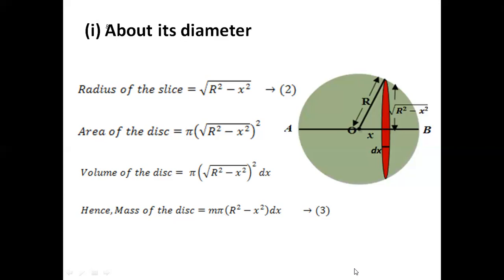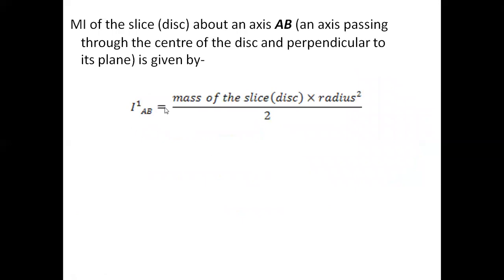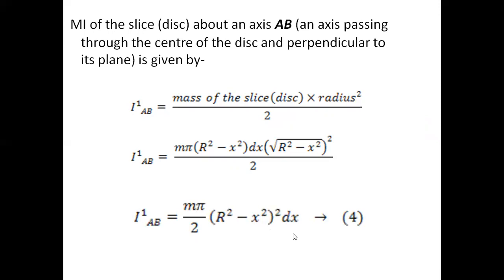Now we calculate the moment of inertia of this slice about axis AB. Since AB is perpendicular to the plane of the slice and passes through its center, the moment of inertia of this slice about AB equals mass times radius squared divided by 2 — the formula for a circular disk. Substituting the values of mass and radius of the slice, I′_AB = (πm/2)(R² − x²)² dx. Take this as equation 4.